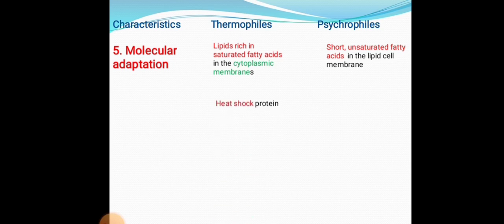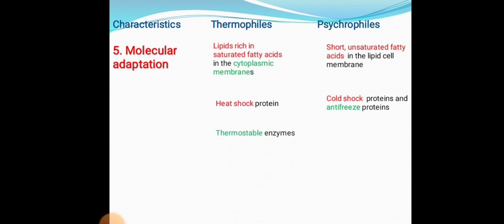Thermophiles contain heat shock proteins, which protect DNA from thermal degradation at high temperatures. Whereas psychrophiles contain cold shock proteins and antifreeze proteins that protect the DNA and chromosome structures. Additionally, thermophiles contain thermostable enzymes that function at high temperatures, whereas psychrophiles contain cold-active enzymes that are functional at low temperatures.